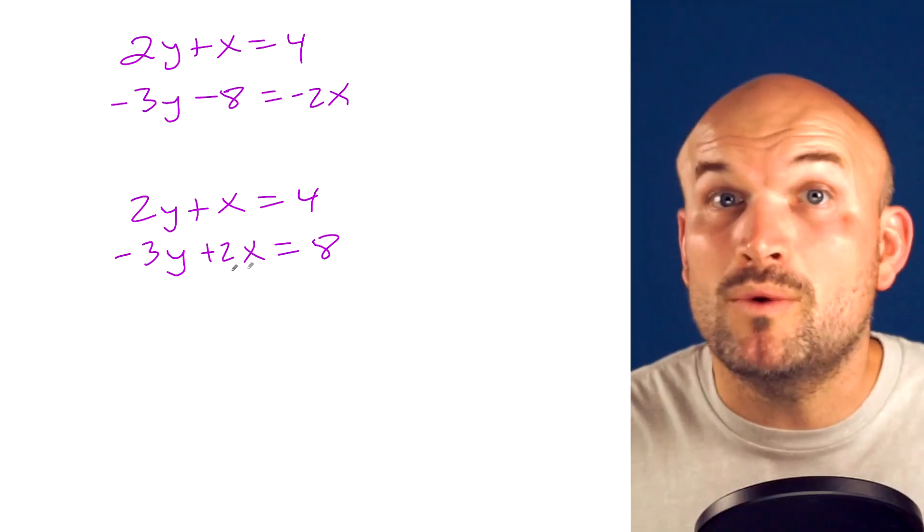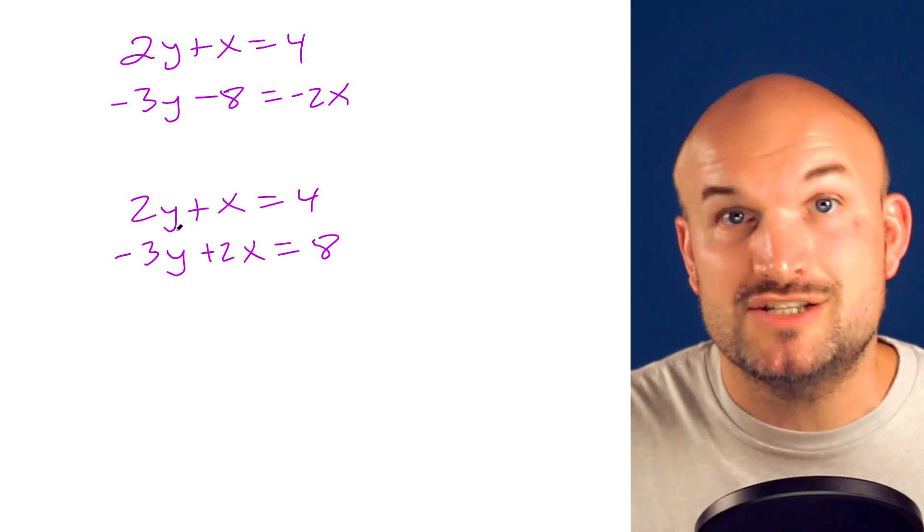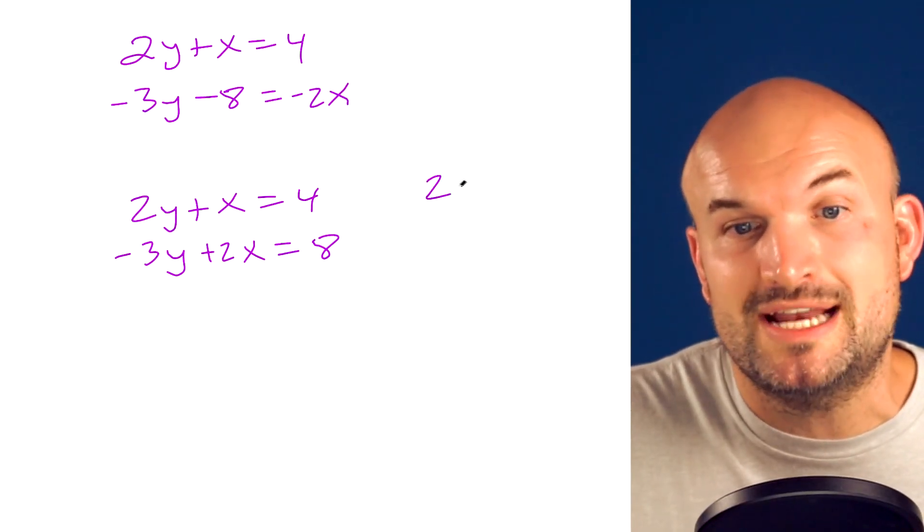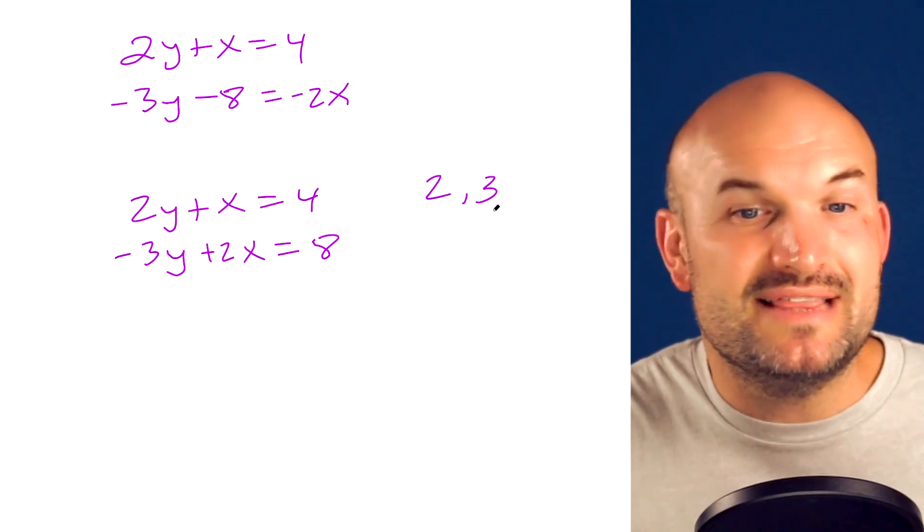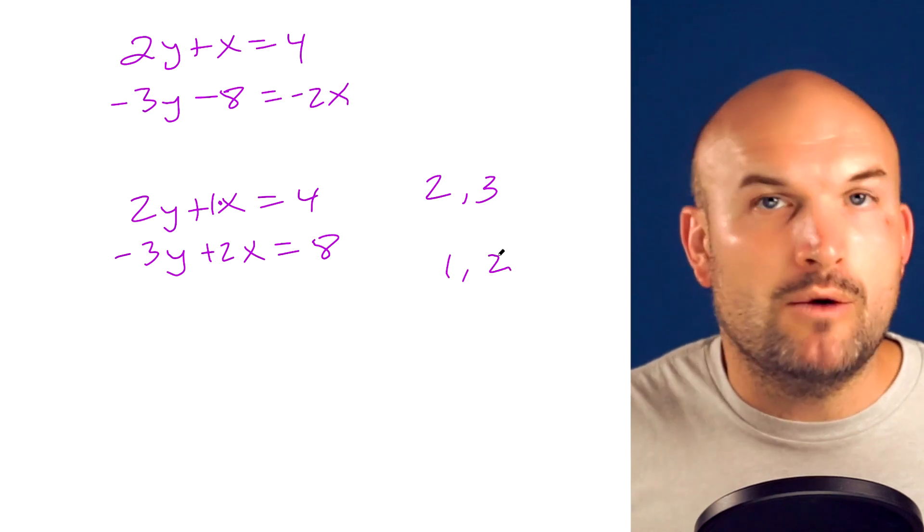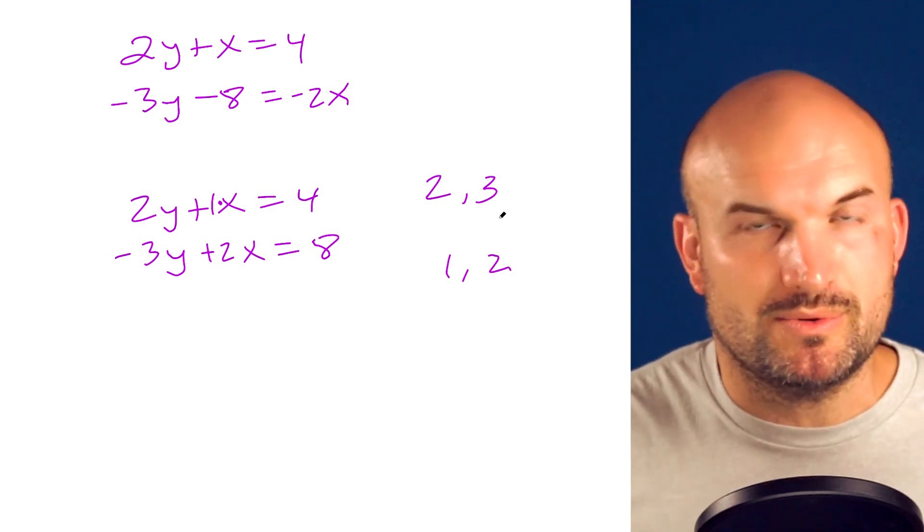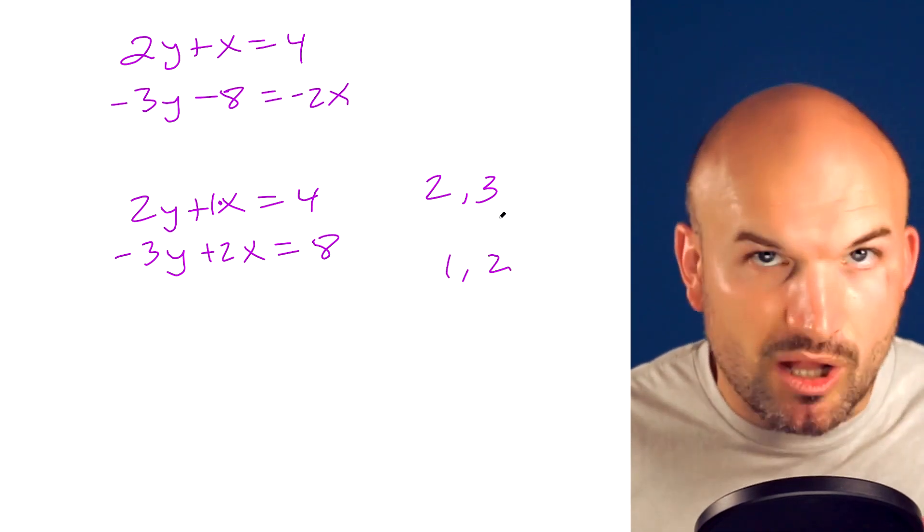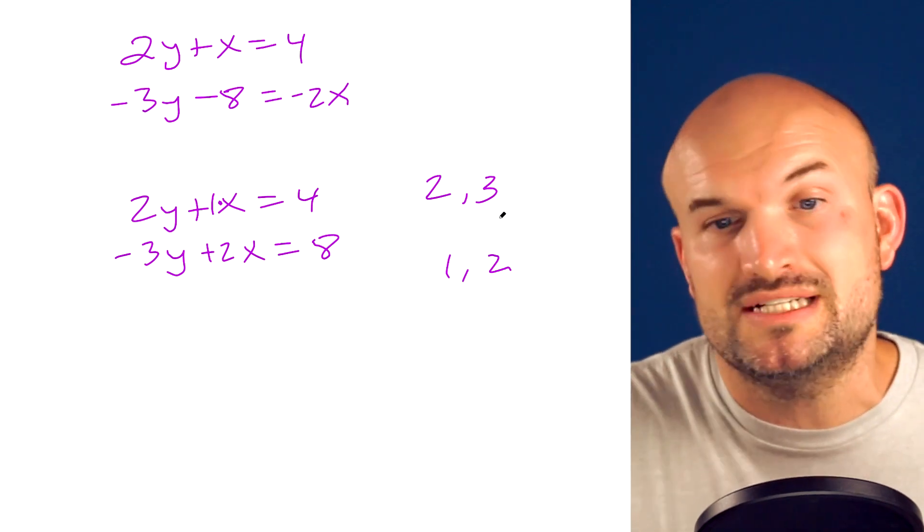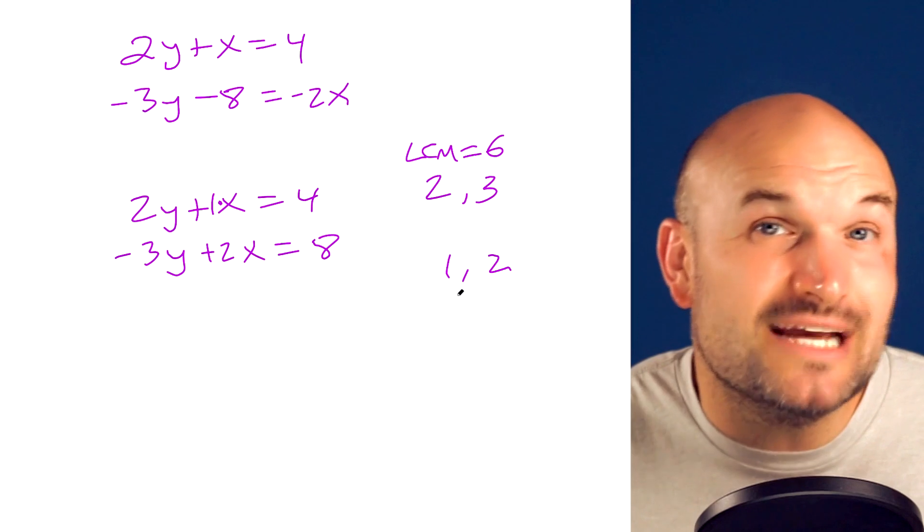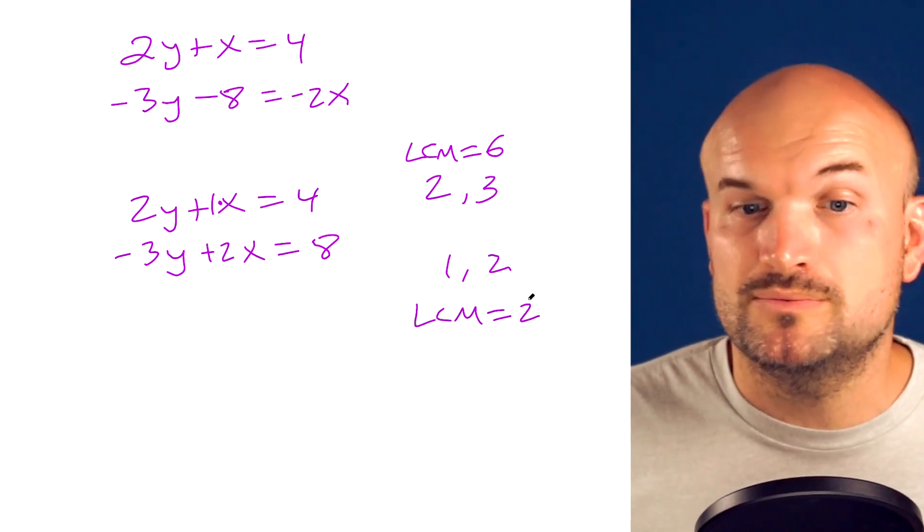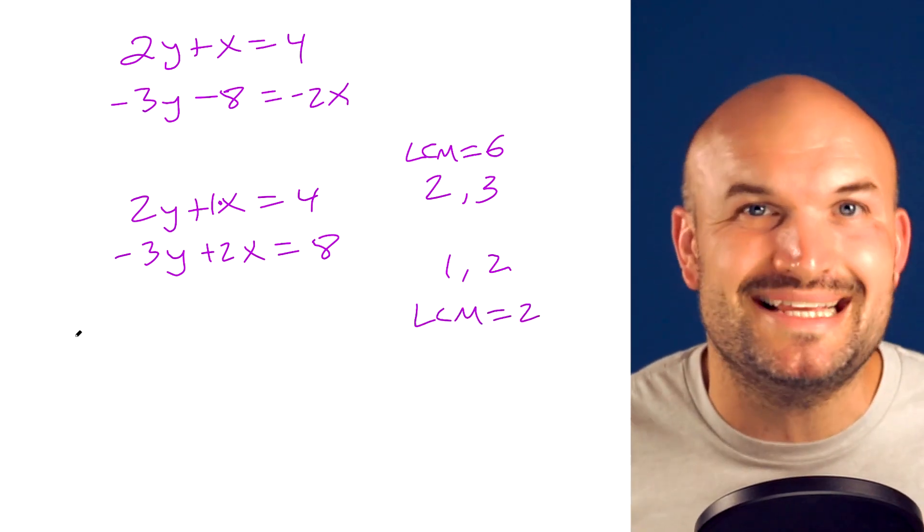I'm starting to get confused. So what I mean by that is let's look at the Ys. The Ys have coefficients of a 2 and a 3. Now forget about the negatives for a second. We're just going to focus on the 2 and the 3. And then the Xs here have a coefficient of a 1 and a 2. Now, which one of these is going to have the lowest common multiple? Well, the lowest common multiple is the smallest number that your two numbers are going to evenly divide into. So the LCM for 2 and 3 is going to be 6. However, the LCM for 1 and 2 is going to be 2. Per tip number three, I'm going to eliminate the X variable.